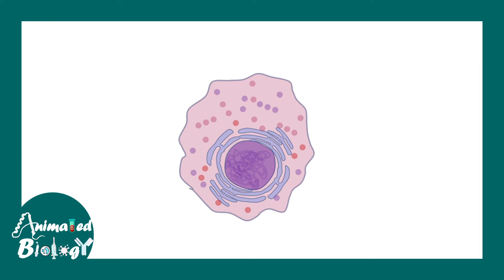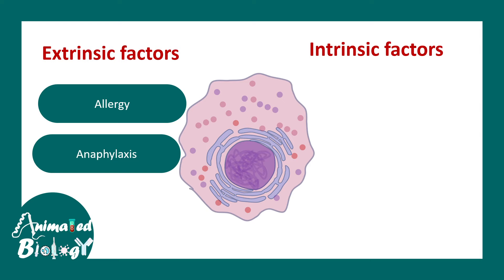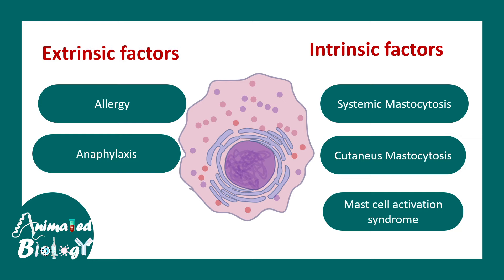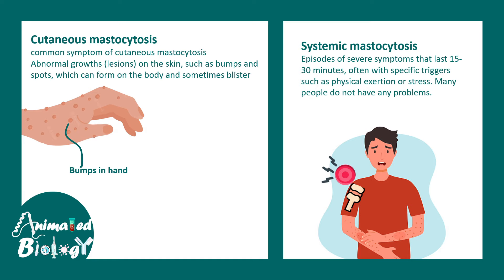Mast cells are associated with many diseases, broadly classified by intrinsic and extrinsic factors. Extrinsic factor-mediated diseases include allergy — triggered by external allergens like pollen grains — and anaphylaxis. Intrinsic factor-mediated diseases include systemic mastocytosis, cutaneous mastocytosis, and mast cell activation syndrome. Cutaneous mastocytosis is characterized by bumps on the skin resembling rashes, which can be painful and are sometimes mistaken for blisters. Systemic mastocytosis involves rashes, stress, joint pain, overall body pain, and fatigue.